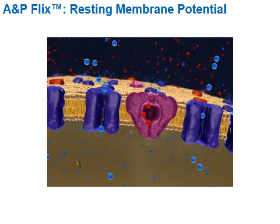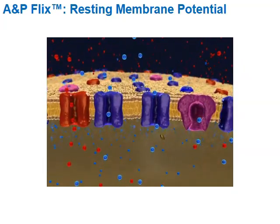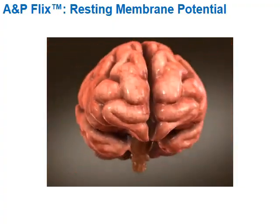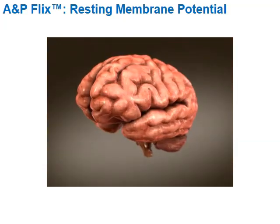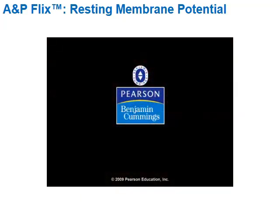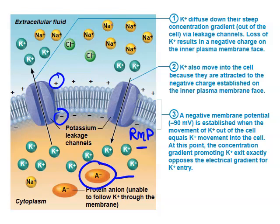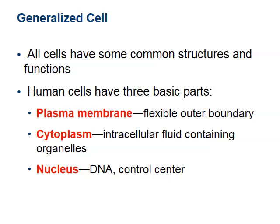Sodium-potassium pumps actively transport sodium ions out and potassium ions back in, compensating for these leaks and helping maintain the resting membrane potential. The extracellular side is positive and the intracellular side is negative, making the overall resting membrane potential negative. These large negative anions present inside the cell contribute to this negative resting state.